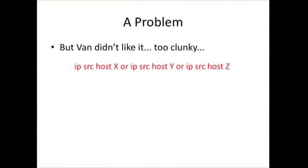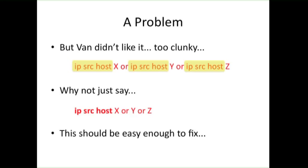Van thought it was too clunky that if he wanted to look at traffic from three hosts X, Y, or Z, he'd have to type 'IP src host X or IP src host Y or IP src host Z.' He said: what I want is to be able to type 'IP src host X or Y or Z.' Seems simple enough.